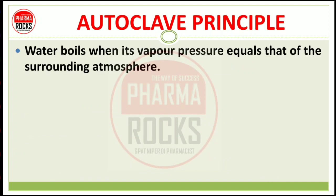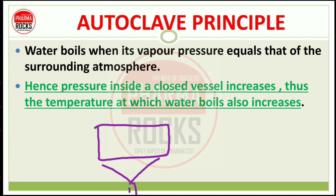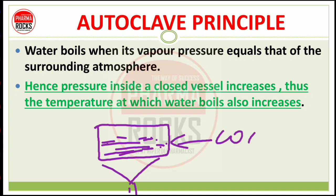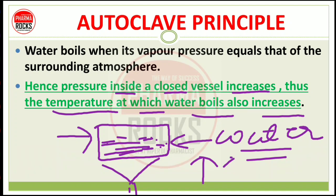What is the principle of autoclave? Water boils when its vapor pressure equals that of the surrounding atmosphere. Hence, pressure inside a closed vessel increases, and thus the temperature at which water boils also increases. Ab jo ek concept hai — koi bhi closed vessel hai aur neeche se aap usko heat de rahe ho, toh jo uska boiling temperature aayega, tab pressure increase kiya jata hai. Hence pressure inside a closed vessel is increased, thus the temperature at which water boils also increases. Jaise jaise pressure increase hota jaayega, waise waise temperature bhi increase hoga.